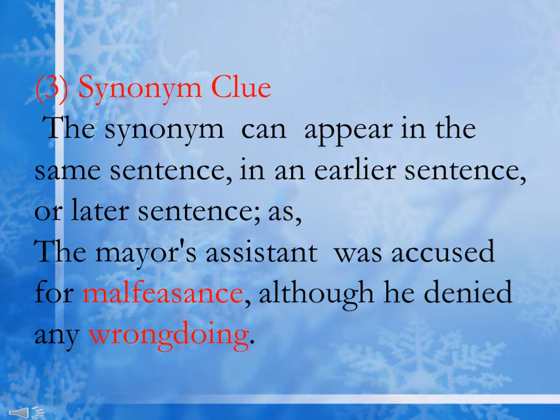The next hint is the synonym clue. A synonym can appear in the same sentence, an earlier sentence, or a later sentence. For example: 'The mayor's assistant was accused of malfeasance, although he denied any wrongdoing.' We don't know the meaning of 'malfeasance,' but in the same sentence it says 'wrongdoing,' so malfeasance is a synonym of wrongdoing. We can understand the word using this synonym clue.